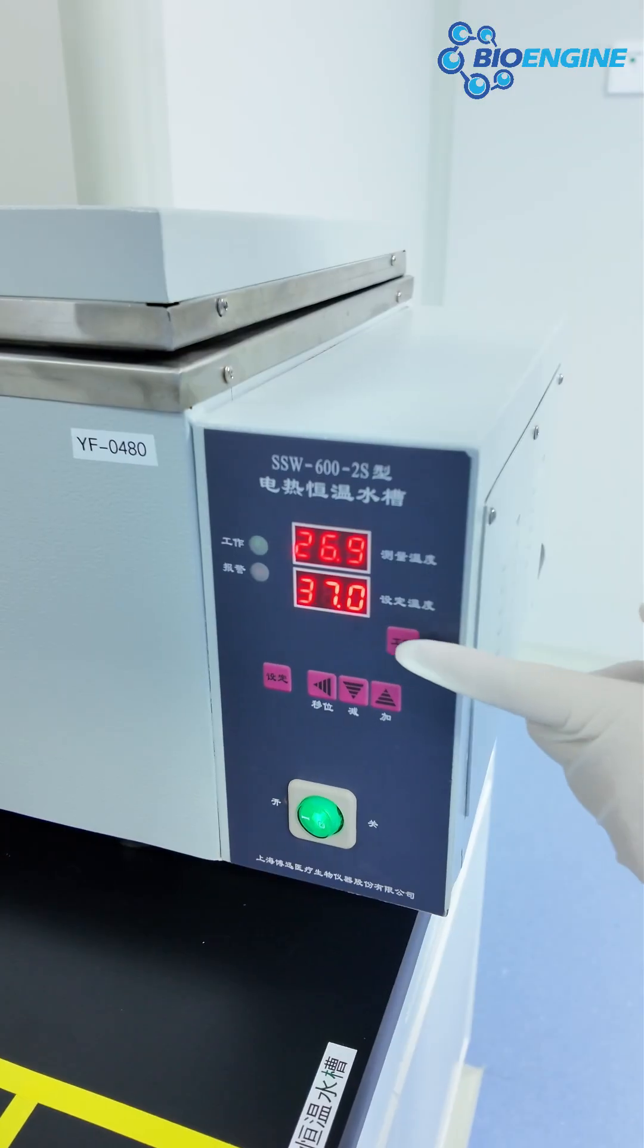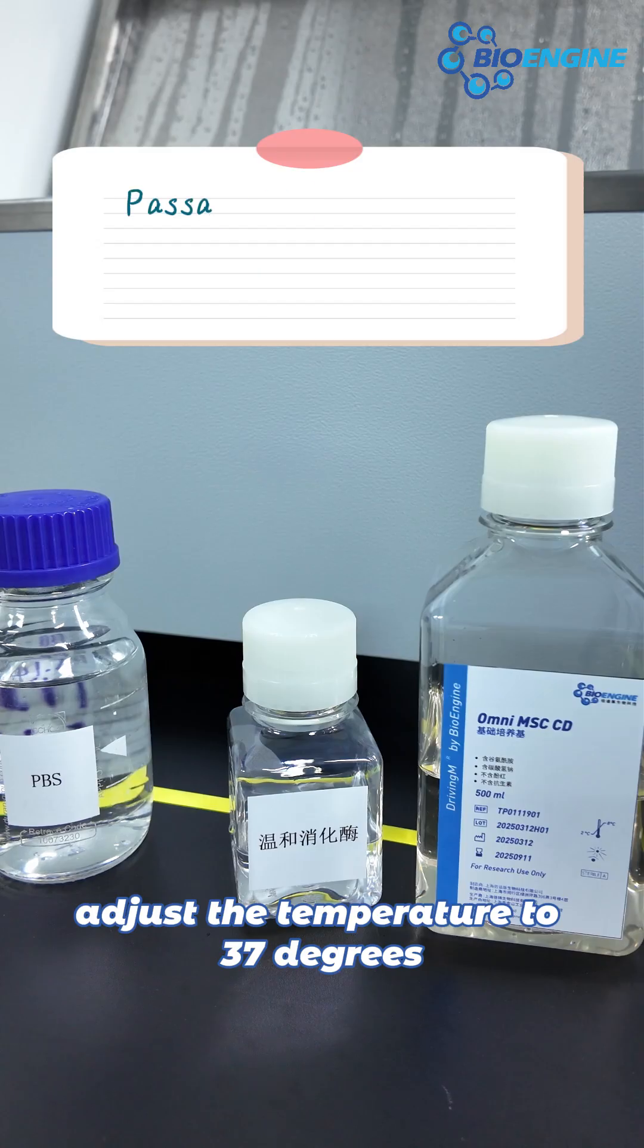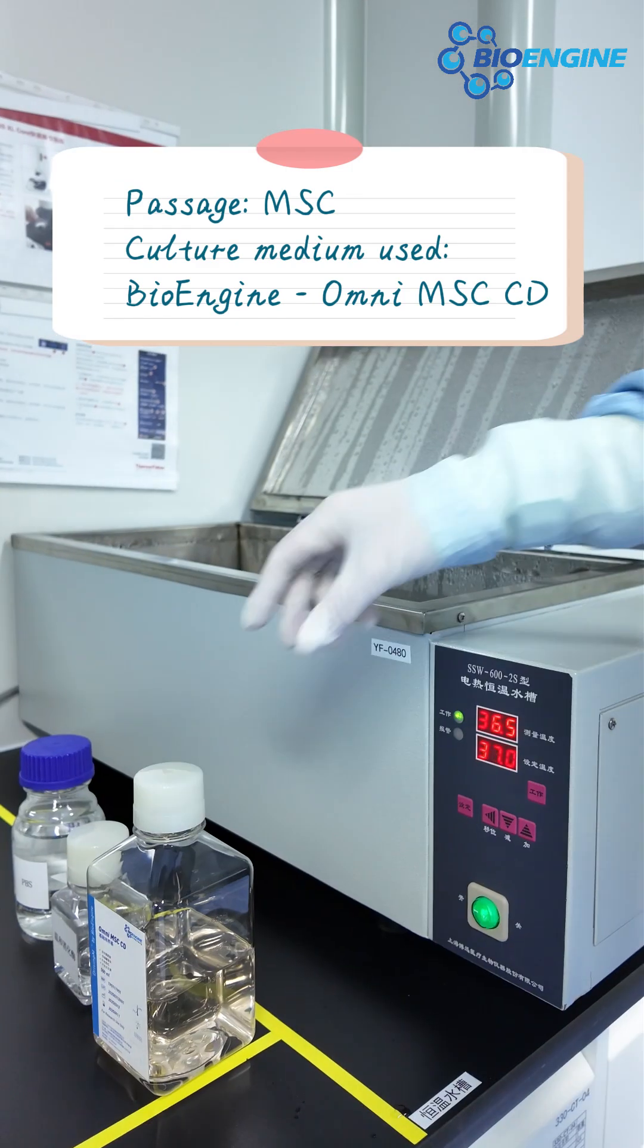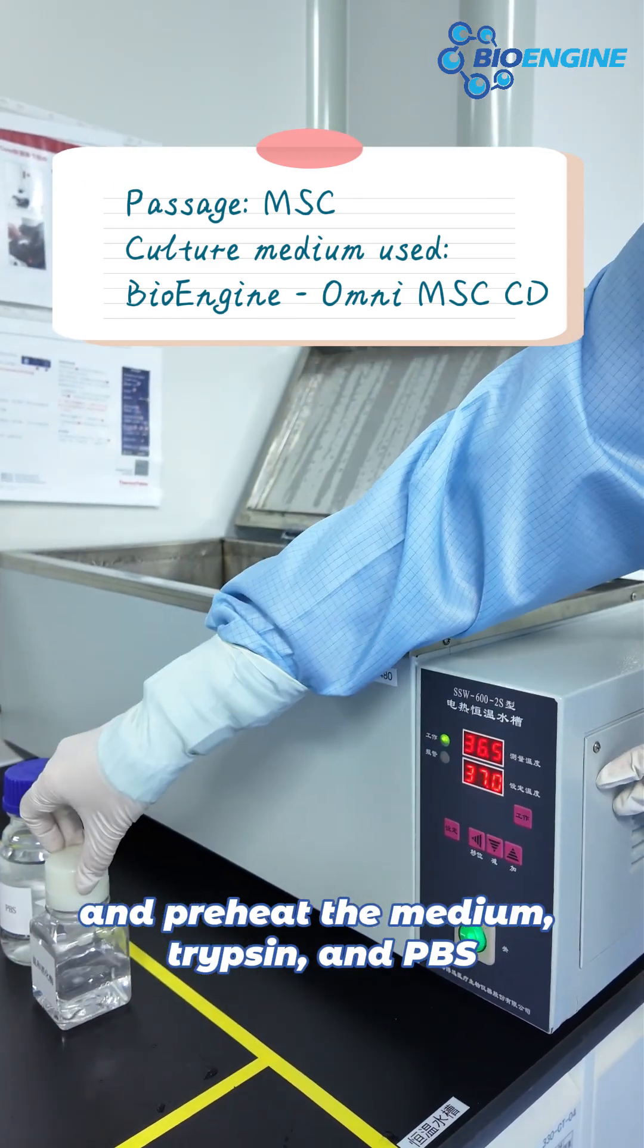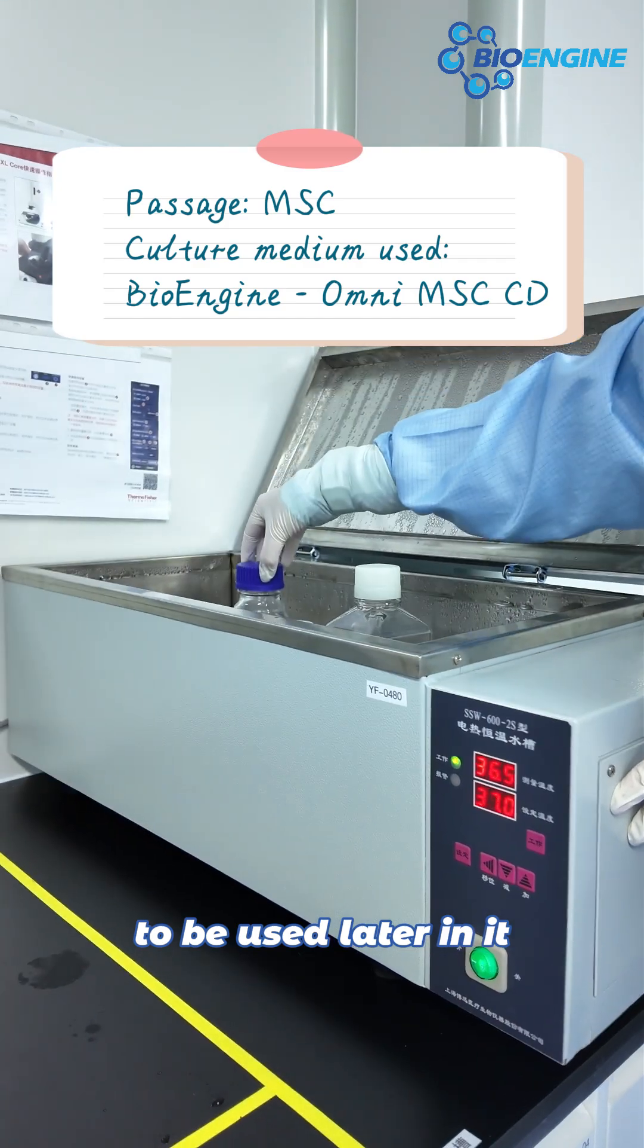Start the water bath and adjust the temperature to 37 degrees. Preheat the medium, trypsin, and PBS to be used later.